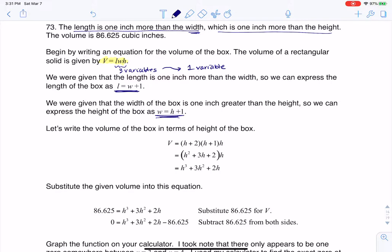If I look at what I have so far, I would say volume is length times width times height. Then let's start substituting some of these in. So instead of length, I can write W plus 1 times W times H.